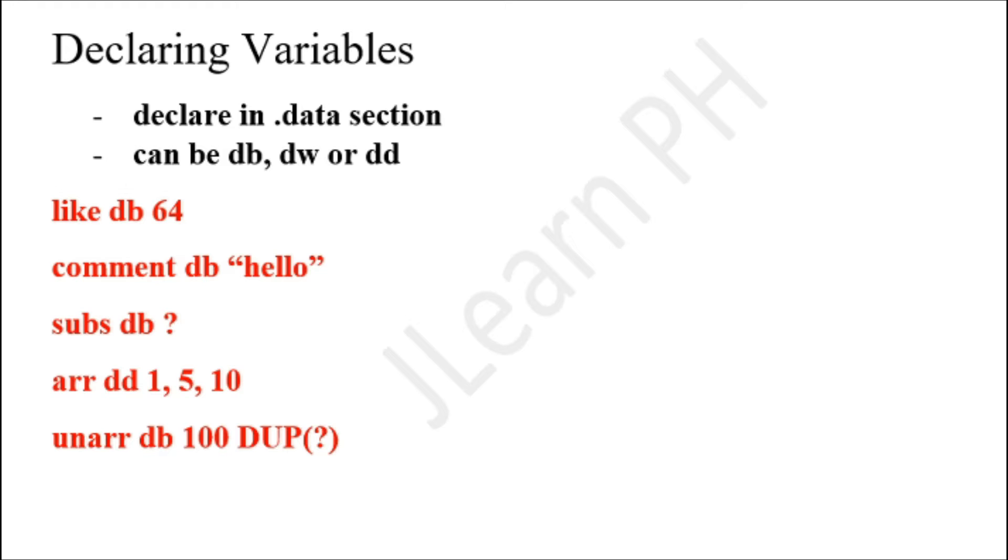The variables that you declare can be db (defined byte), dw (defined word), or dd (defined double). Let's go to some examples. 'like db 64' basically declares a byte. db defines a byte referred to as 'like' that contains the value 64.